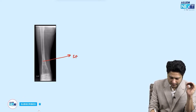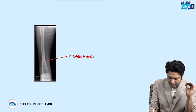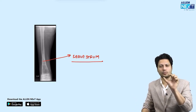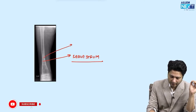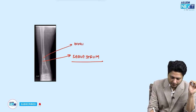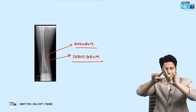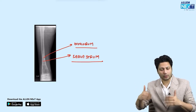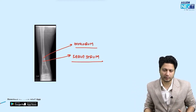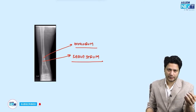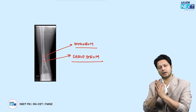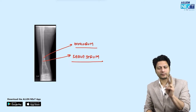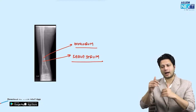Questions may be framed on the sequestrum, involucrum — the bony wall around the sequestrum or infective tissue — as well as the cloaca and the sinus. These are all clinical features of chronic osteomyelitis. Two question types: one gives you an X-ray for identification; the other is a long question with a sinus history — the answer is chronic osteomyelitis.